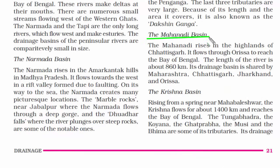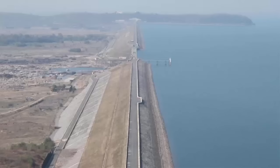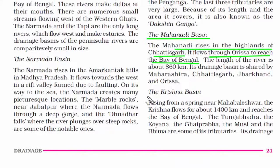Now let's read about the Mahanadi Basin. This river rises in the highlands of Chhattisgarh, passes through Odisha and reaches the Bay of Bengal. The famous Hirakud Dam is built on this river.